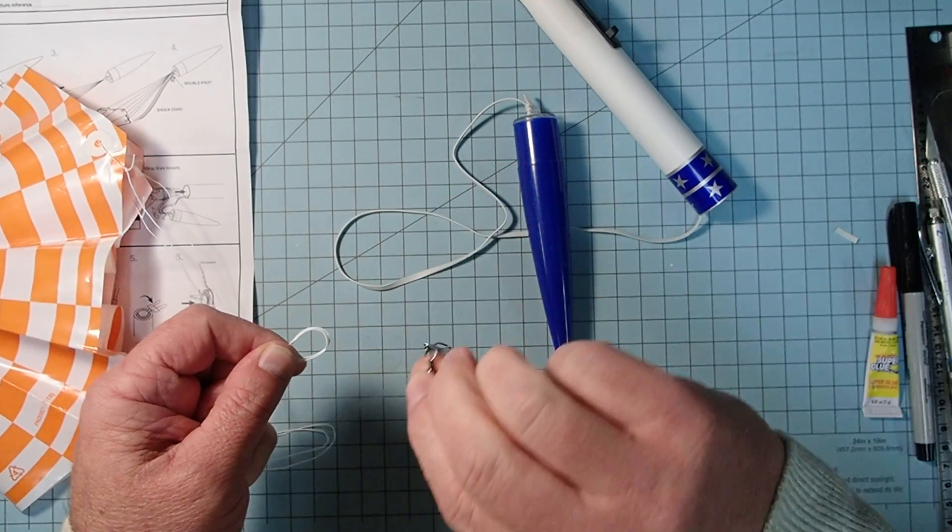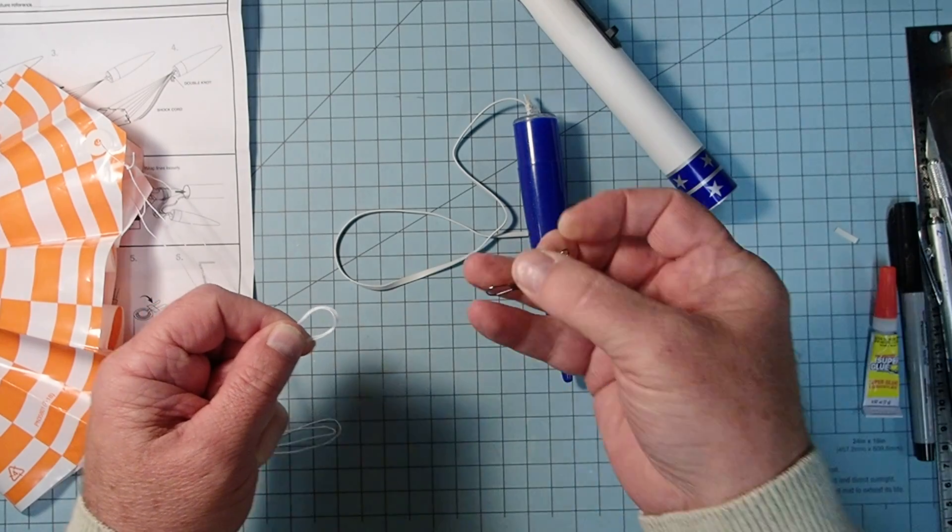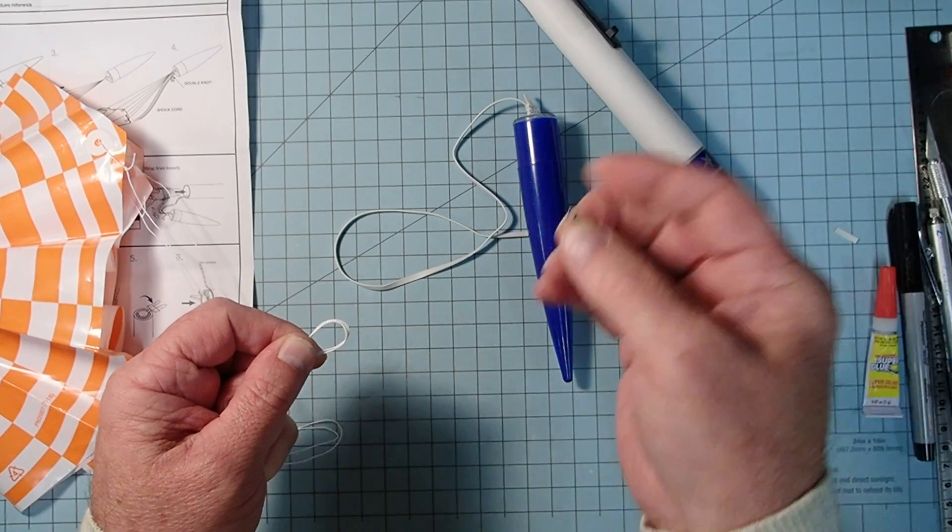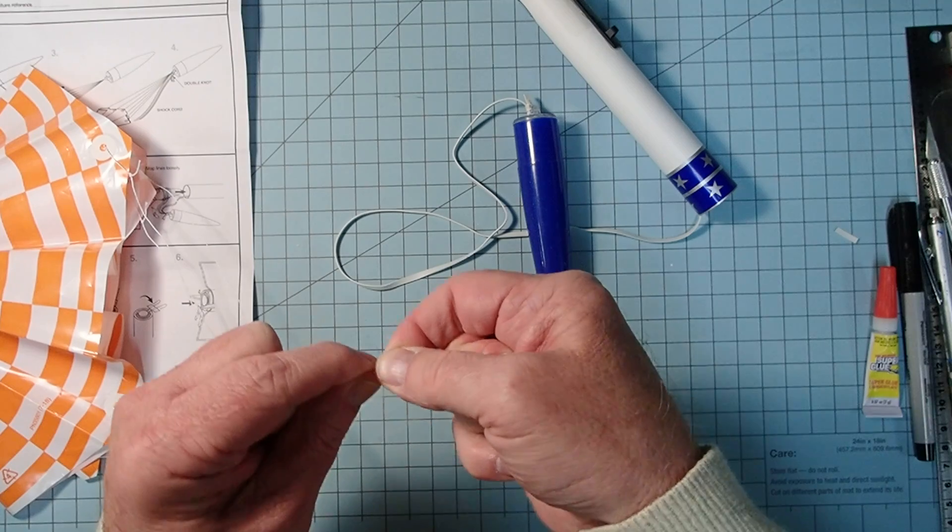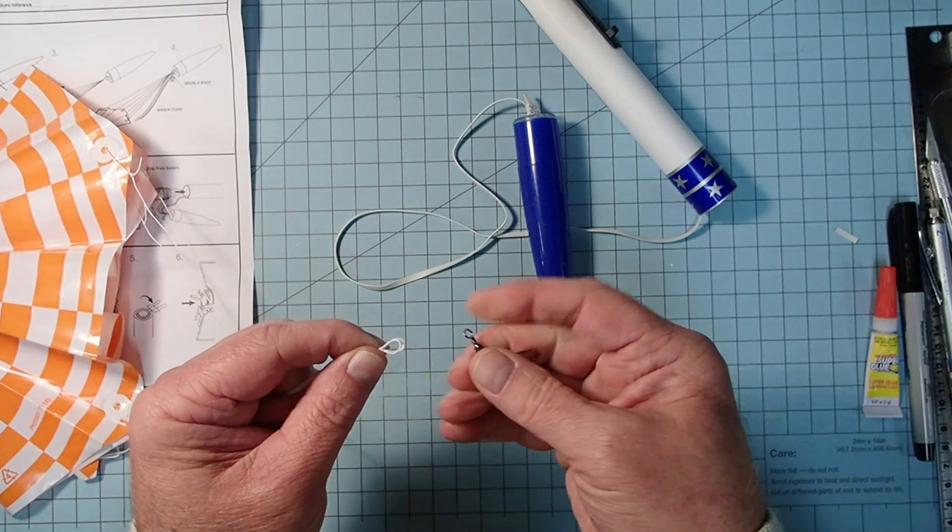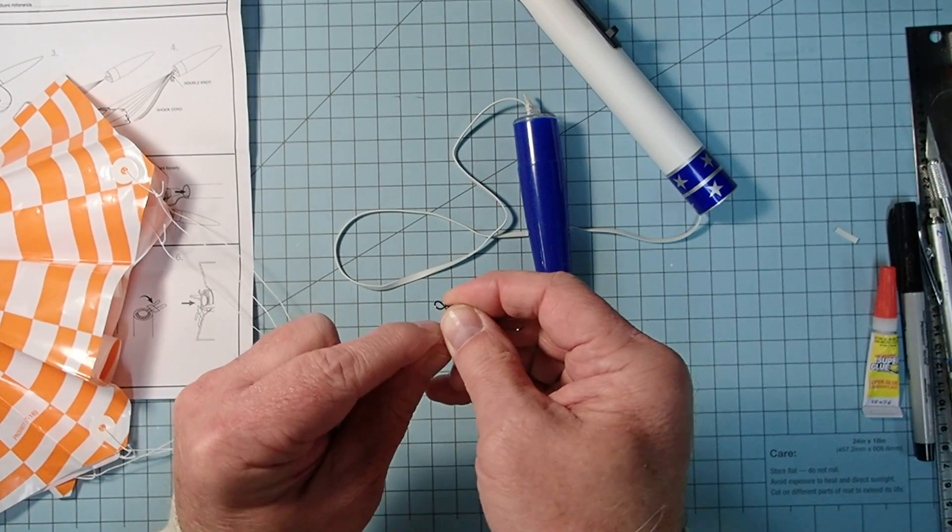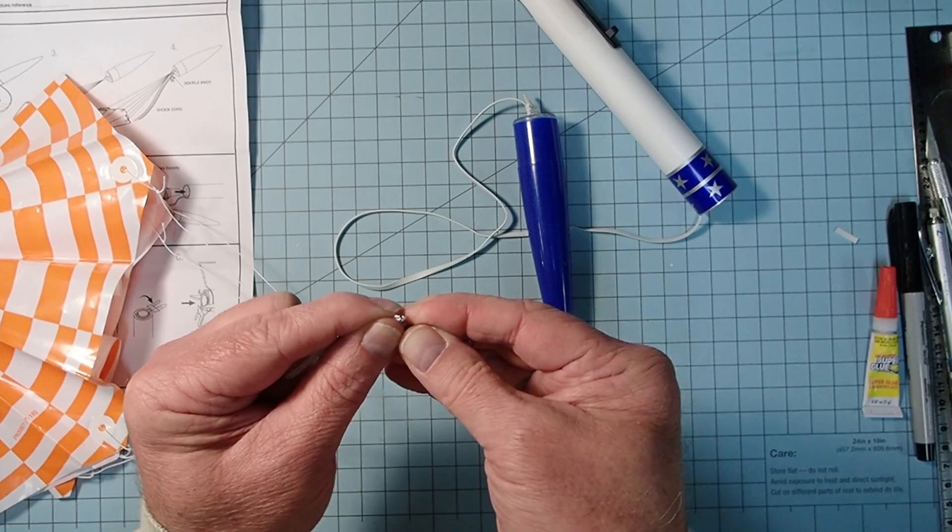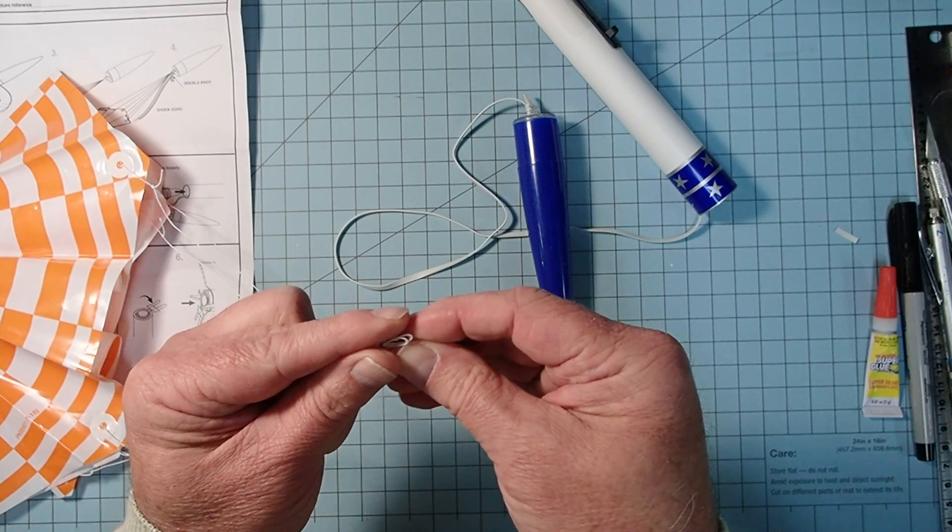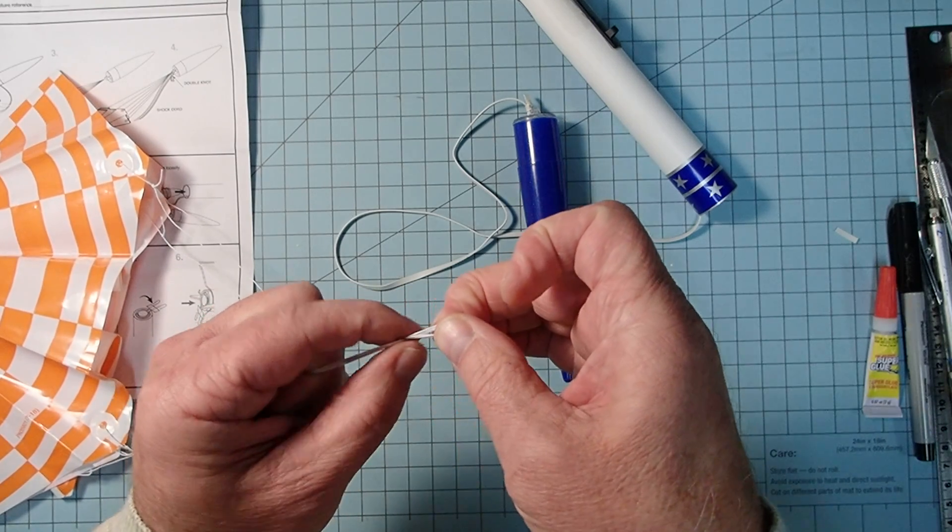This has a snap on one end that allows you to take it on and put it off and then a loop on the other. And so take your shroud line loop now and put all three of those loops through the loop end on the swivel.